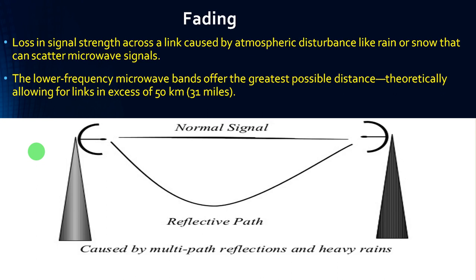The lower frequency microwave bands offer the greatest possible distance — theoretically allowing approximately 50 km, that is 31 miles. Shown here is Site A and Site B with a normal signal without any obstacles. If there are any fading issues, the signals are scattered and we get reflection between the two microwave antennas. This is the reflected path.